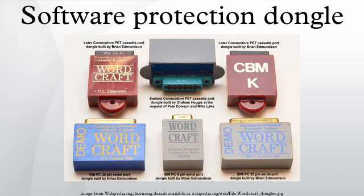Efforts to introduce dongle copy protection in the mainstream software market have met stiff resistance from users. Such copy protection is more typically used for very expensive packages and vertical market software, such as CAD-CAM software, hospitality and special retail software, digital audio workstation applications, and some translation memory packages. In cases such as pre-press and printing software, the dongle is encoded with a specific, per-user license key, which enables particular features in the target application. This is a form of tightly controlled licensing, which allows the vendor to engage in vendor lock-in and charge more than it would otherwise for the product.